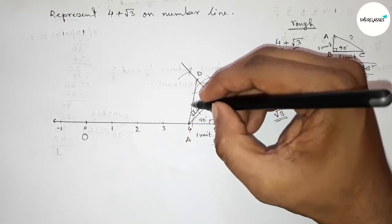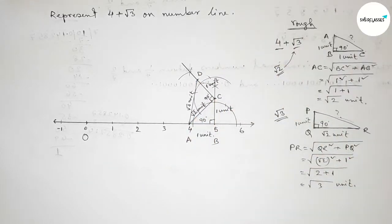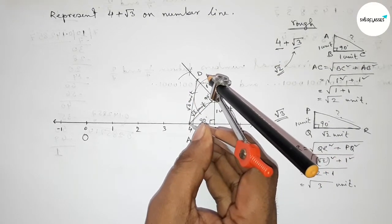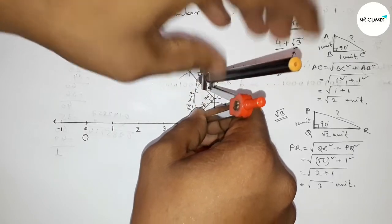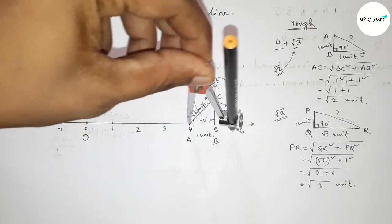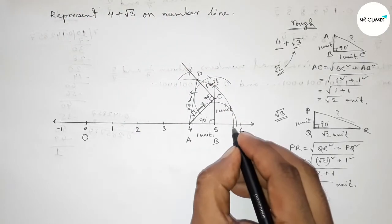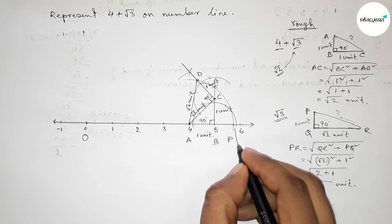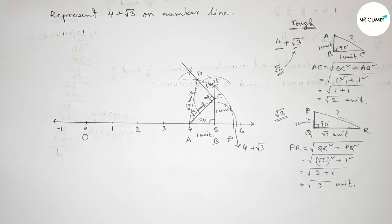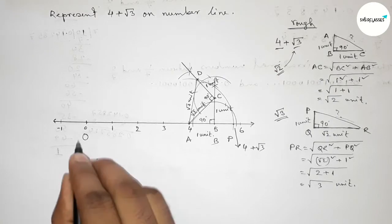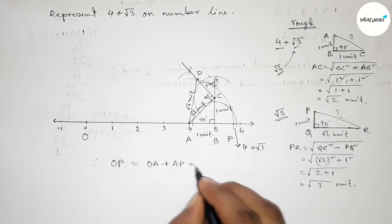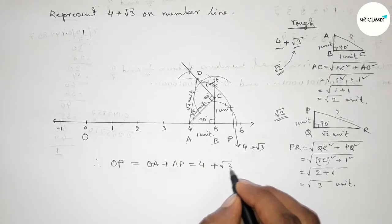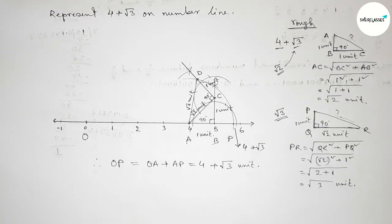Joining A and D — from this we can say that AD is obviously root 3 unit length. Now using the compass, taking length AD equal to root 3, drawing an arc through point D which meets the number line at point P. So this is 4 plus root 3 on the number line. Therefore OP equals OA plus AP, which is 4 plus root 3 unit. Thanks for watching — if this video is helpful, please share it with your friends.